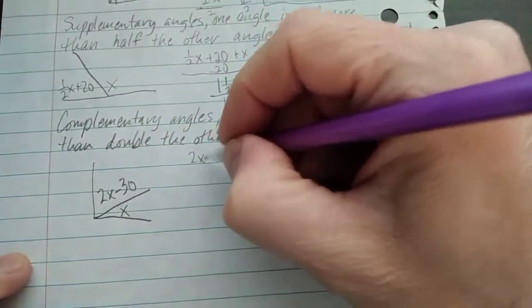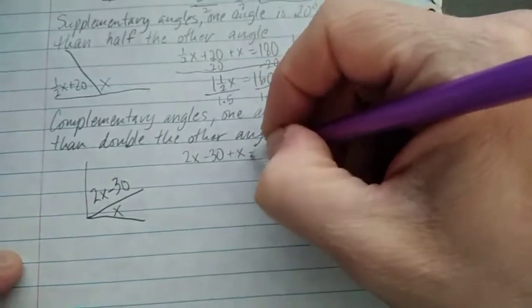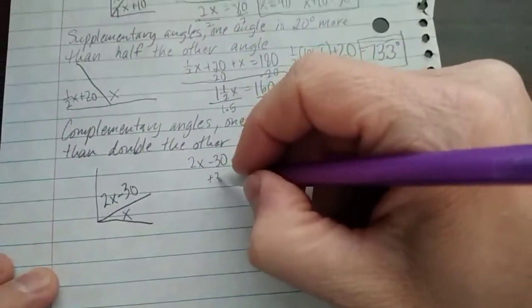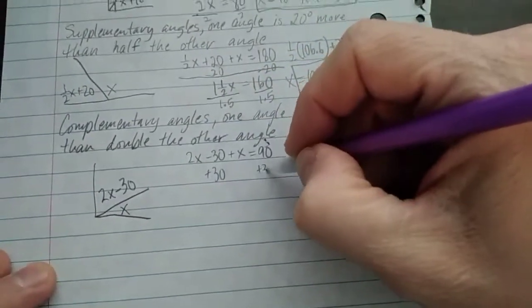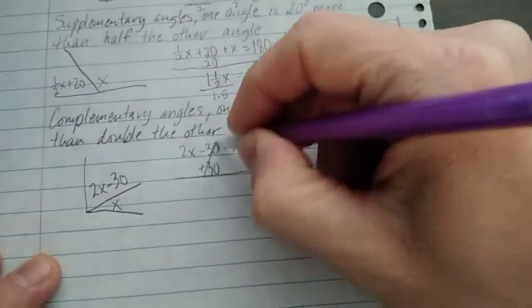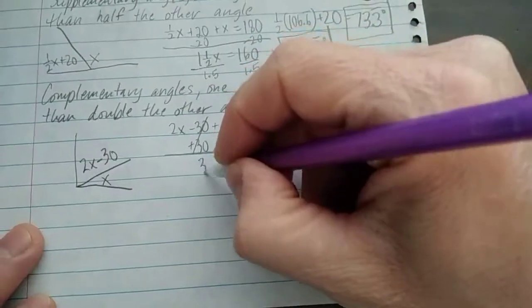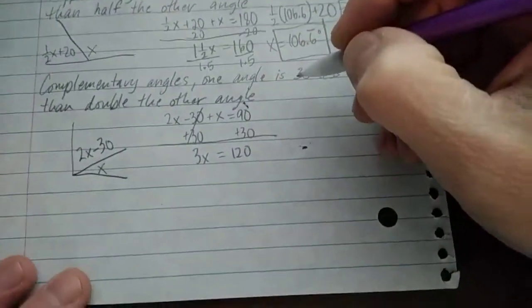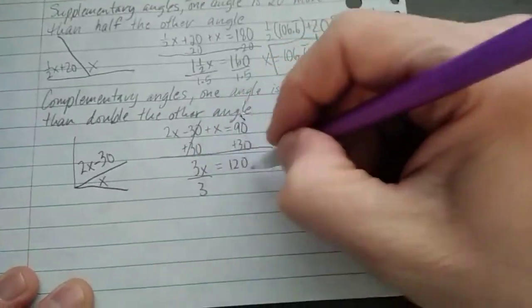So 2x minus 30 plus x equals 90. So I'm going to add 30 to undo this minus 30 to both sides. And over here it's gone. I'm going to add 2x to x to get 3x. And that equals 120. So now divide both sides by 3.